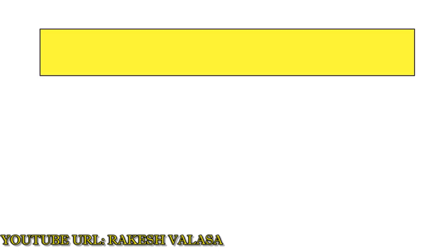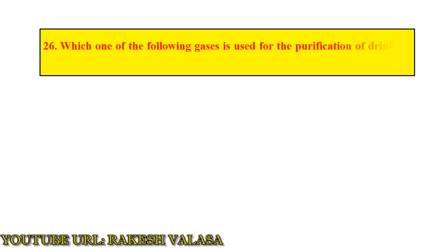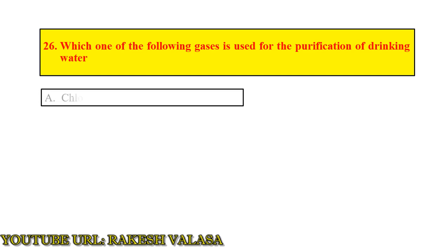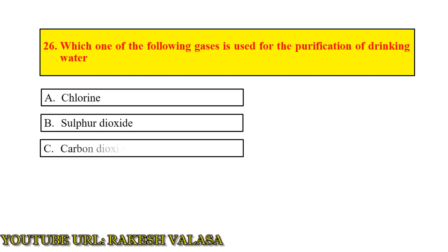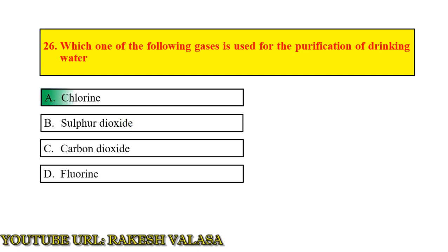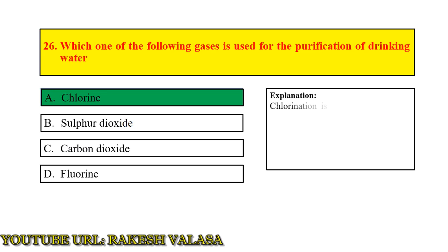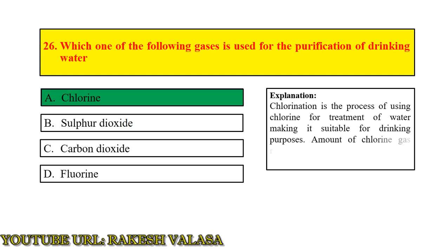Question number 26: Which one of the following gases is used for the purification of drinking water? — Answer: Chlorine. Explanation: Chlorination is the process of using chlorine for treatment of water, making it suitable for drinking purposes. The amount of chlorine gas required for water treatment may vary depending upon water quality.